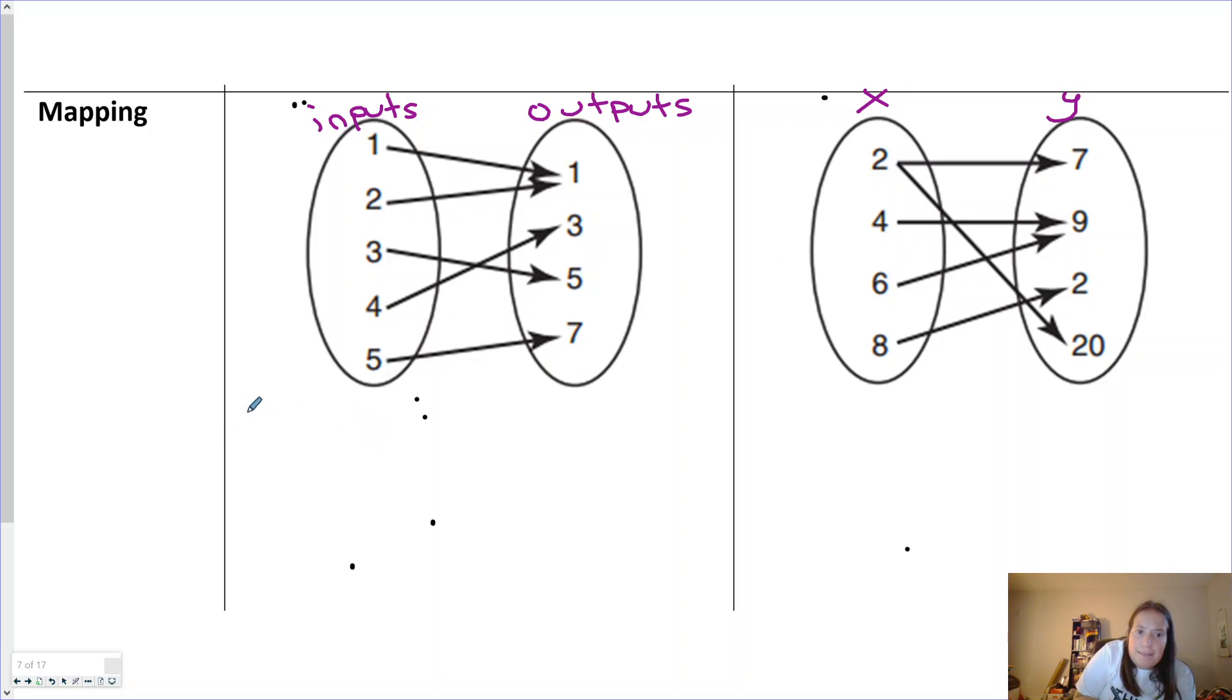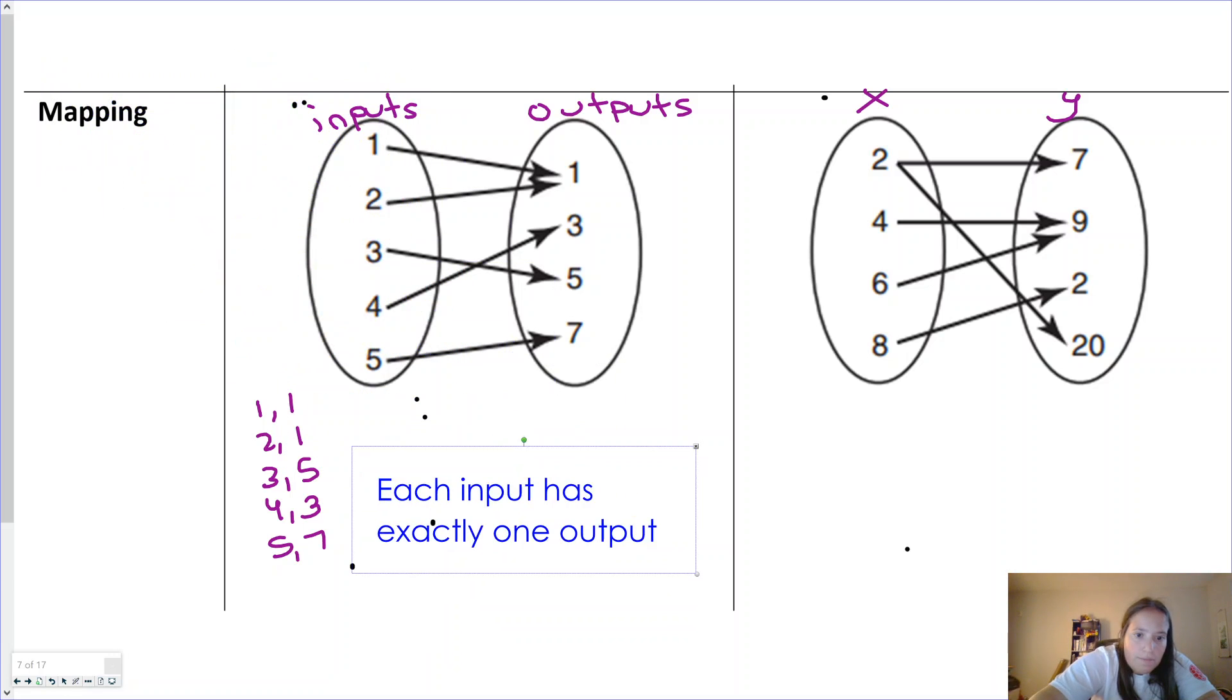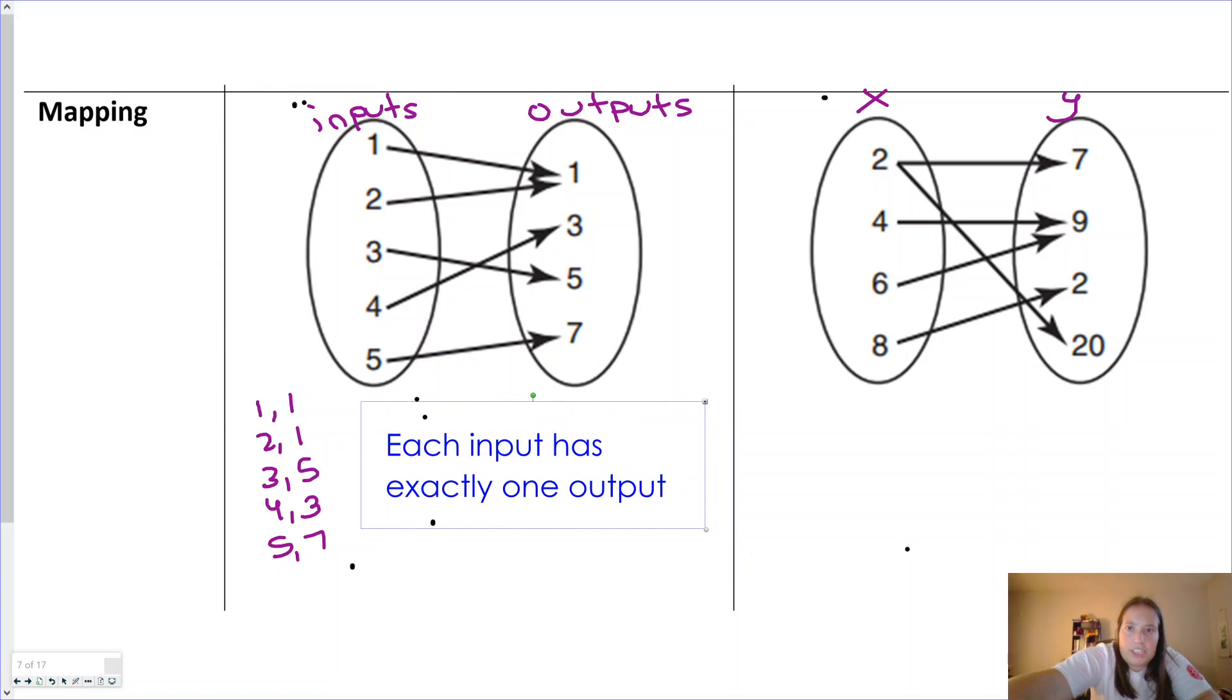If we were to name these, we would see we have (1,1) as a point. So 1 input goes to 1 output, 2 goes to 1, 3 goes to 5, 4 goes to 3, and 5 goes to 7. Which goes with our definition of each input having exactly 1 output. There is no repeat of inputs.